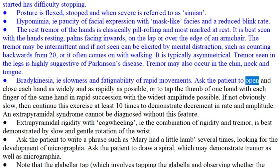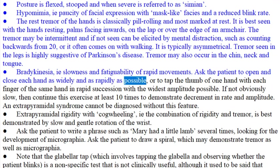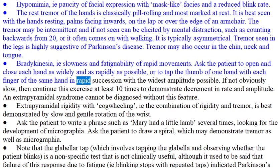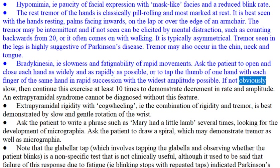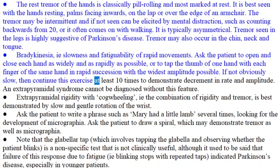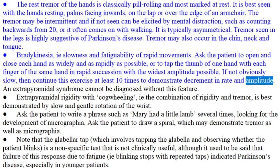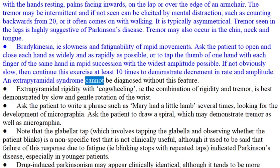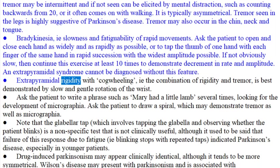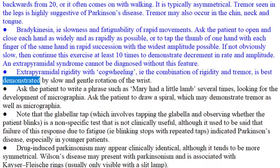Ask the patient to open and close each hand as widely and as rapidly as possible, or to tap the thumb of one hand with each finger of the same hand in rapid succession with the widest amplitude possible. If not obviously slow, then continue this exercise at least 10 times to demonstrate decrement in rate and amplitude. An extrapyramidal syndrome cannot be diagnosed without this feature. Extrapyramidal rigidity with cogwheeling, i.e. the combination of rigidity and tremor, is best demonstrated by slow and gentle rotation of the wrist.